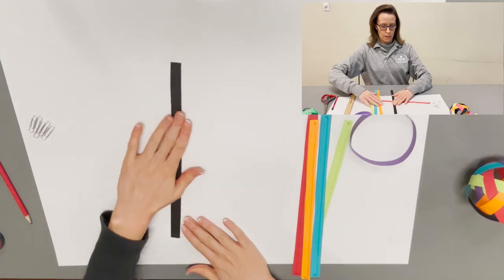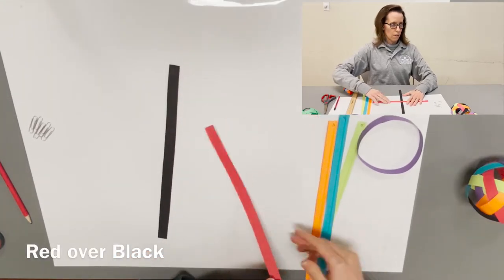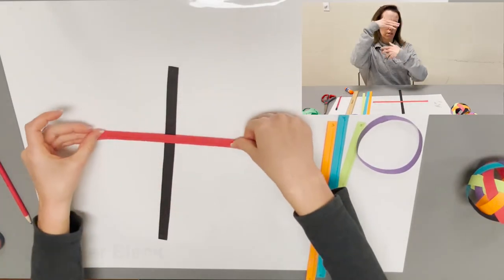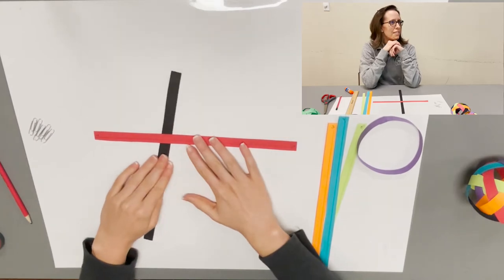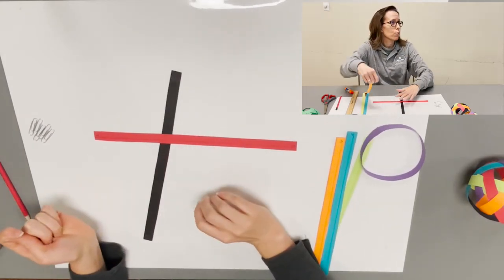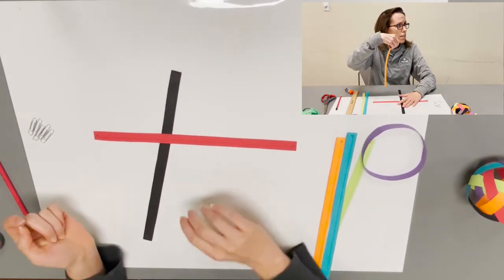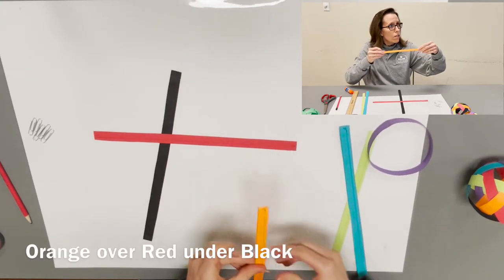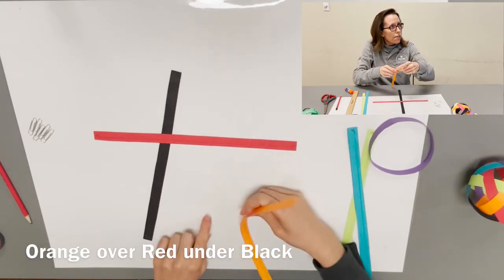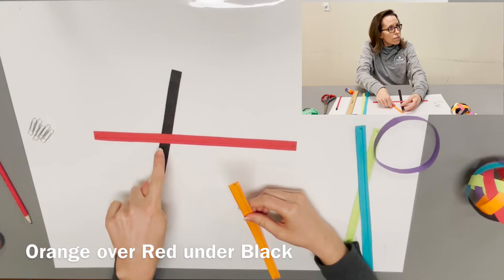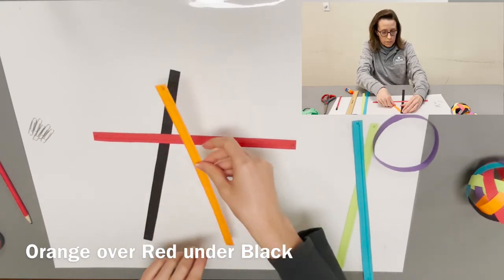Your next step is to lay down your black strip and you're going to cross your red strip over. This is where you have to start keeping track of your unders and overs. It's going to be a big theme for these.